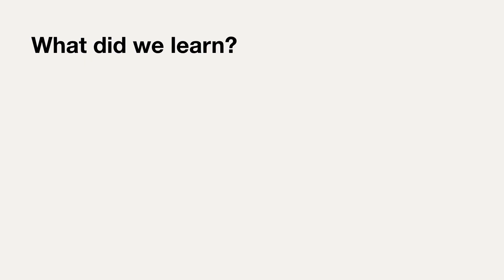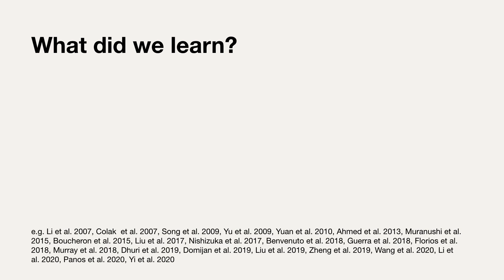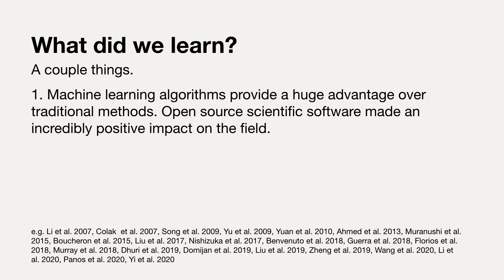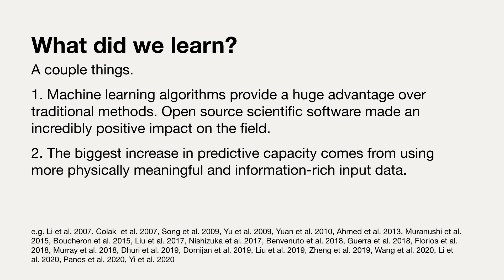So, what did we learn from all this? Looking at these four approaches and many other excellent studies using machine learning for flare prediction, we've learned a couple of things. First, machine learning algorithms provide a huge advantage over traditional methods, and open source scientific software made an incredibly positive impact on the field. Second, increasing the complexity of a machine learning model doesn't necessarily increase predictive capacity — the biggest increase comes from using more physically meaningful and information-rich input data, which is not the same as more data in general. The more front-end work you put into identifying physically meaningful features, the more it pays off in predictive capacity.